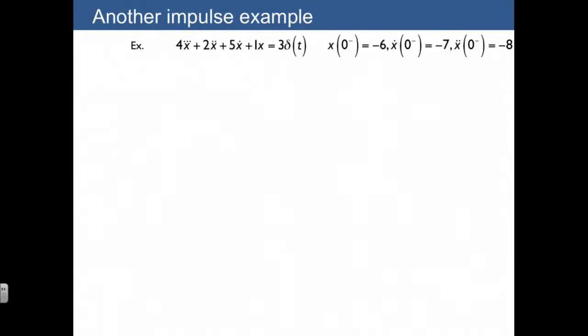Here's another example that's more complicated. It's actually a third derivative, and we're given three initial conditions for x, x dot, and x double dot. We've written in 0 minus as the initial condition just to be clear. Since this is a third order differential equation, we expect that the second derivative is going to have a sudden change in initial conditions.